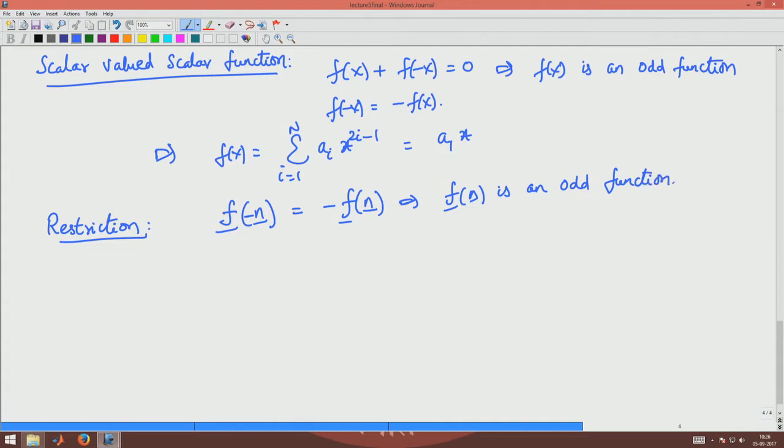This implies f(n) is an odd function. In particular, what Cauchy has shown is this f as a function of n is a linear function of n. You will understand what you mean by a linear function of n shortly.